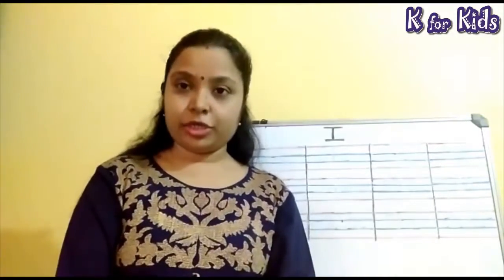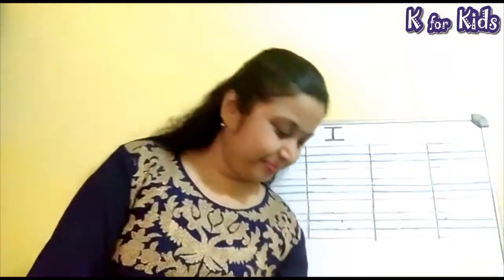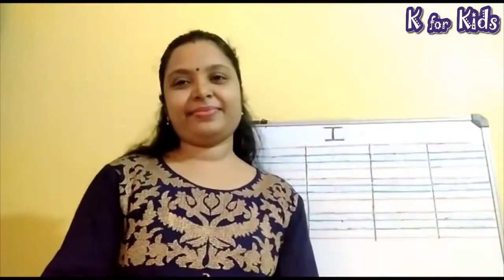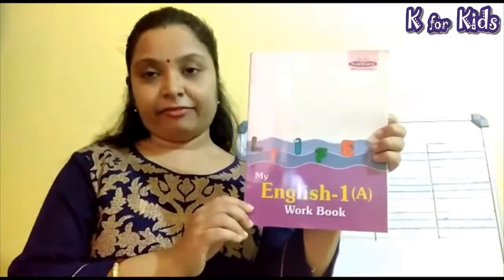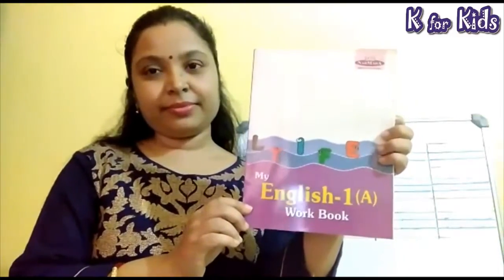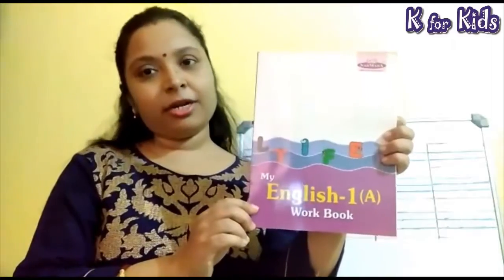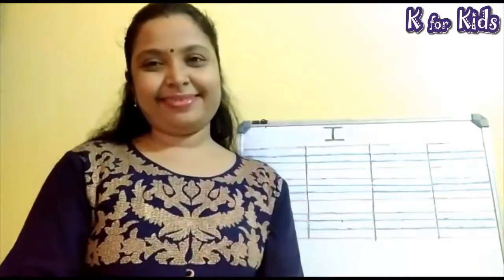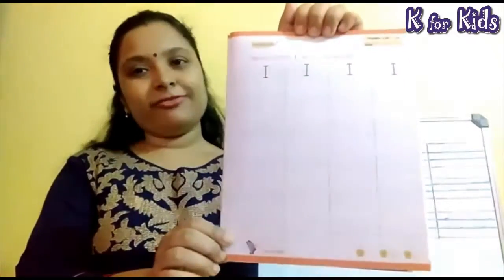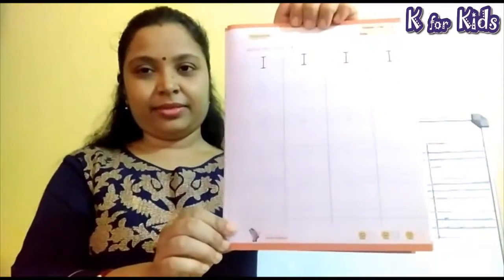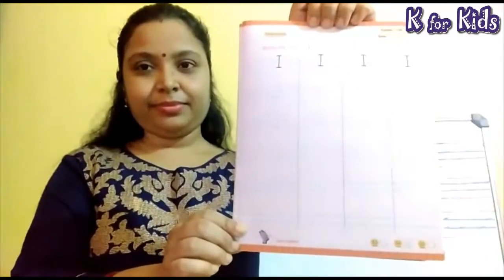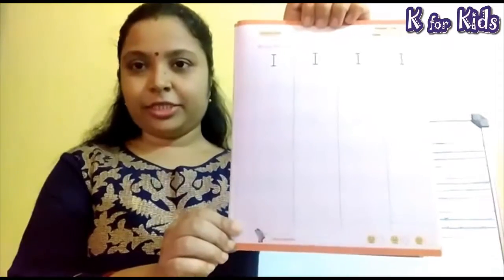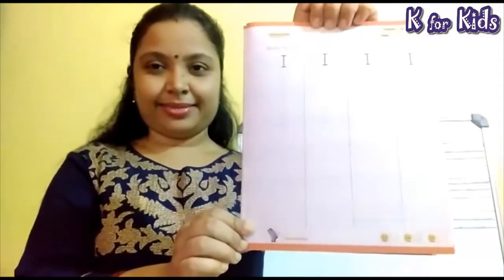So children, take out your English workbook and a pencil. Have you taken out your book? Now open to page number 14. Children, you have to write the alphabet I. Are you ready, children? Yes. Let's start.